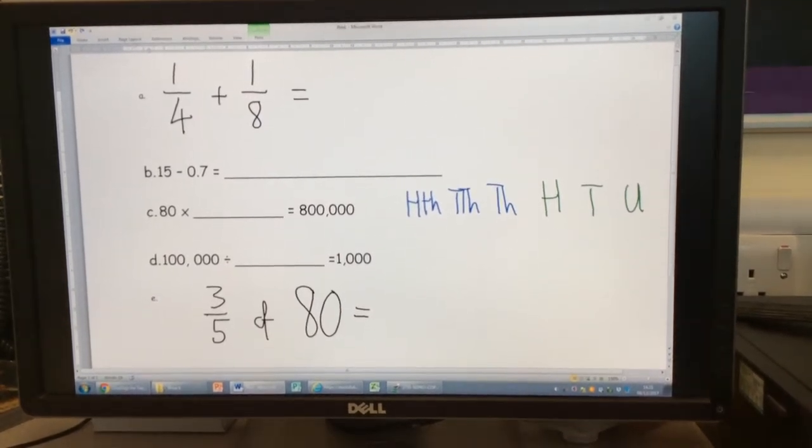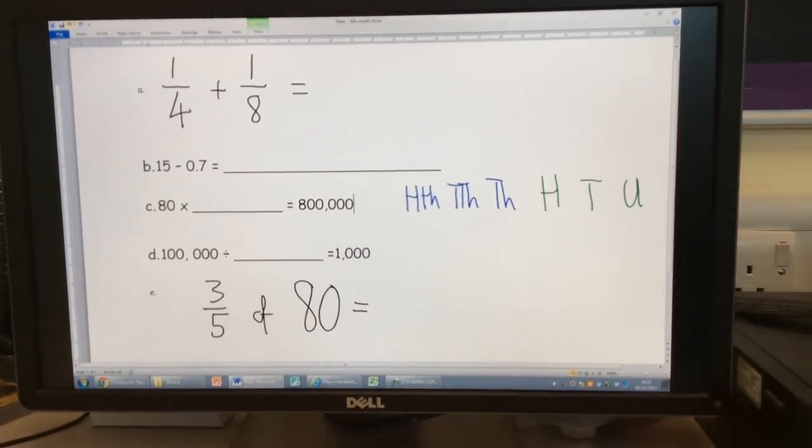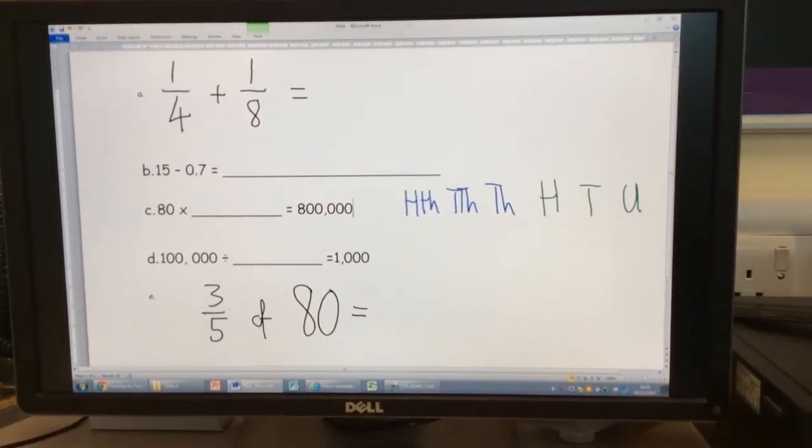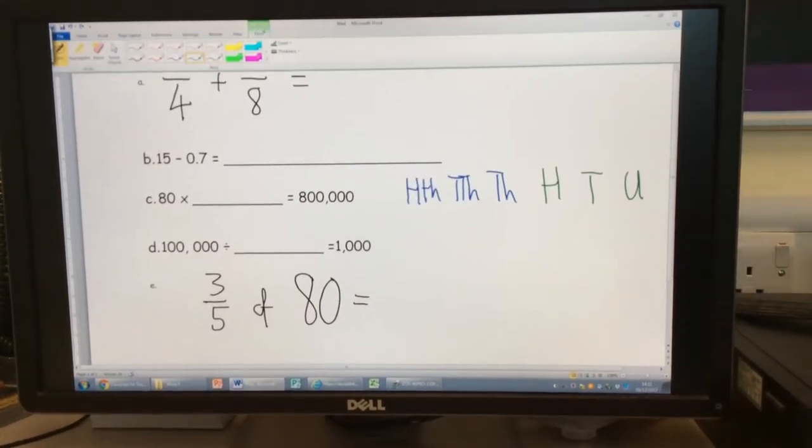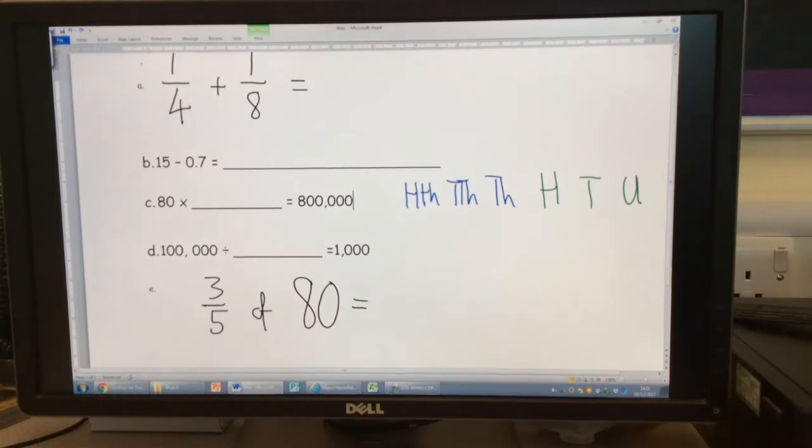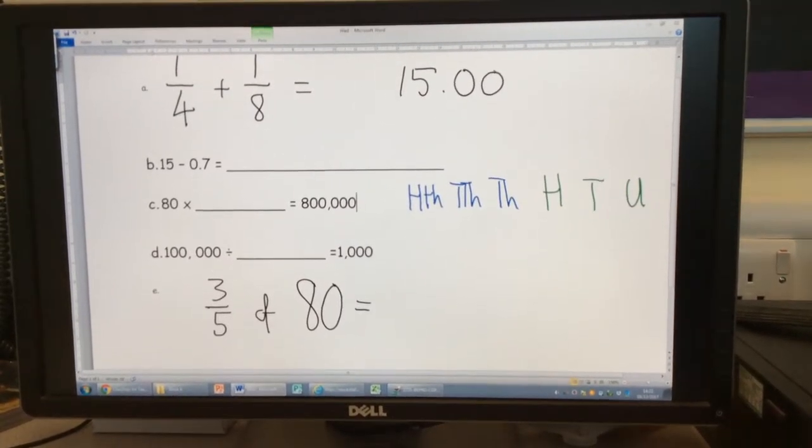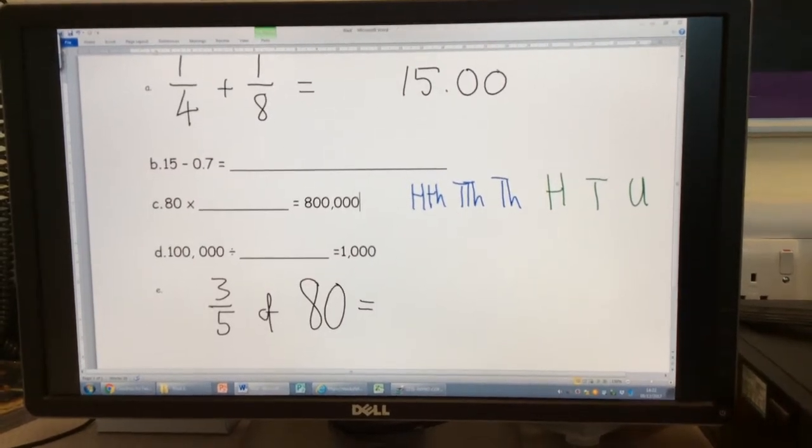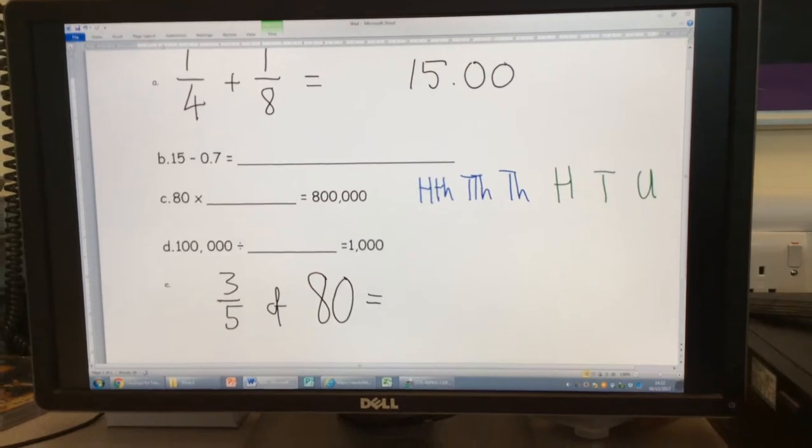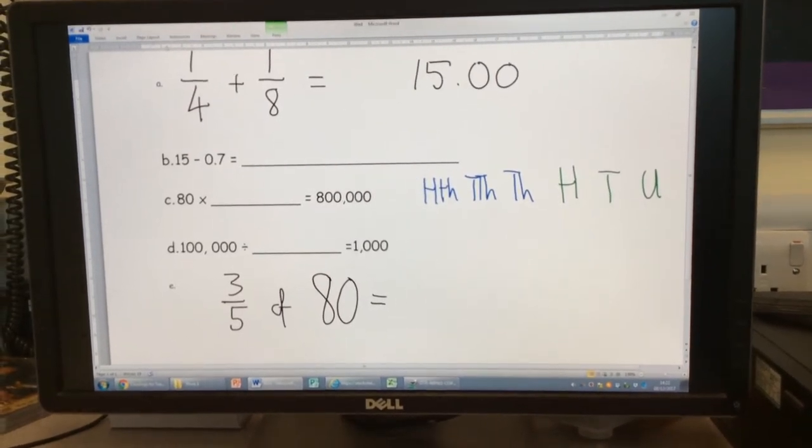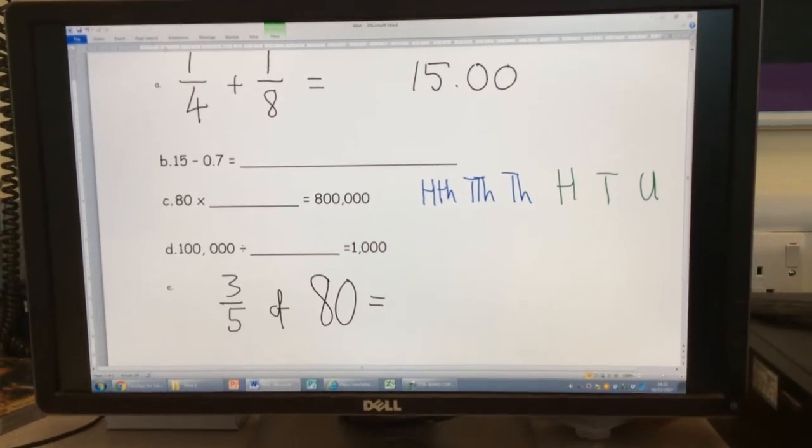If I'm going to pretend 15 pounds is money, what do you mean I'm going to need to do? We're going to do 15.00. So we've got our two digits in our... What columns are these two digits in? Bava? Tenths and hundredths. In descending order, tenths and hundredths.